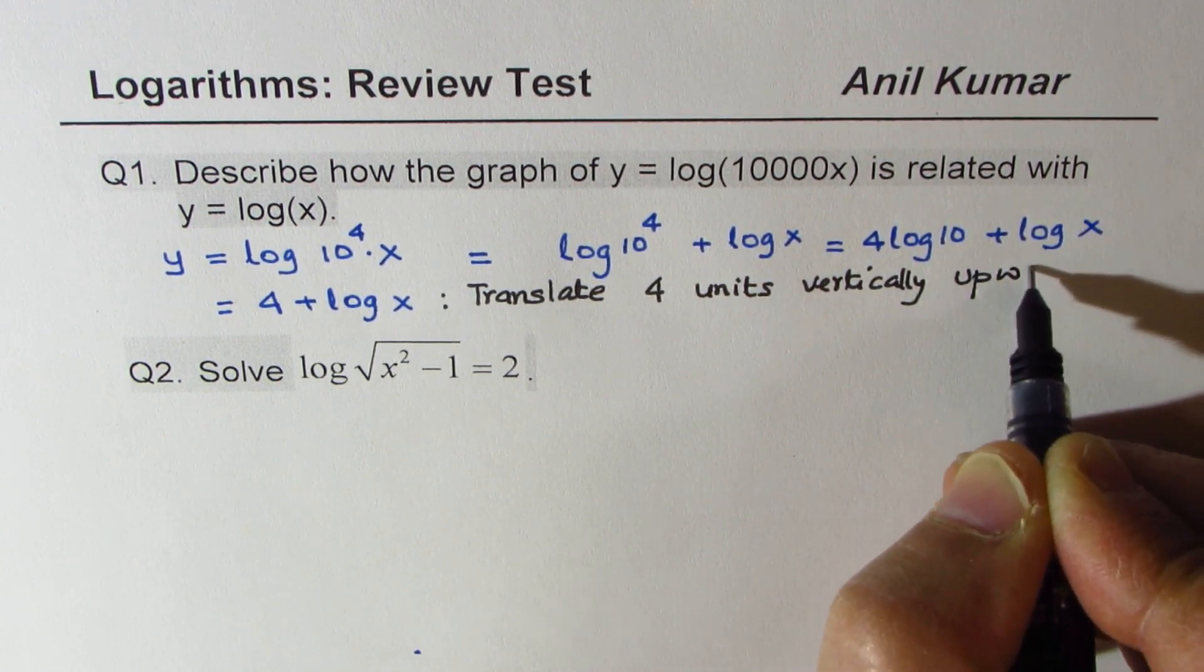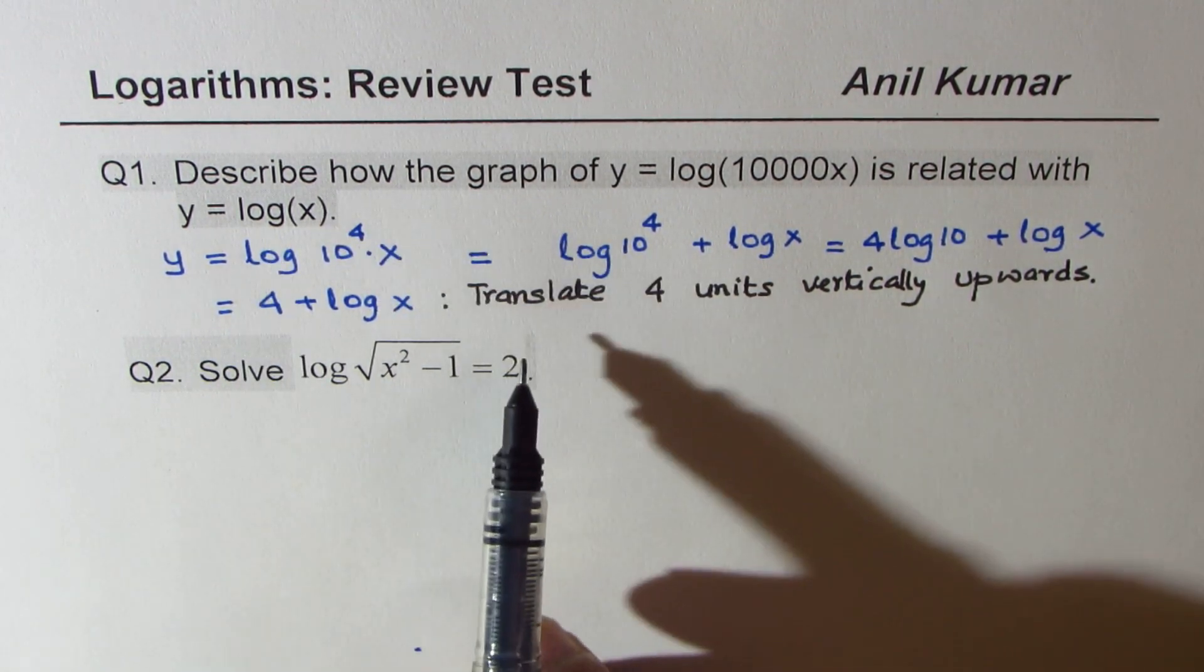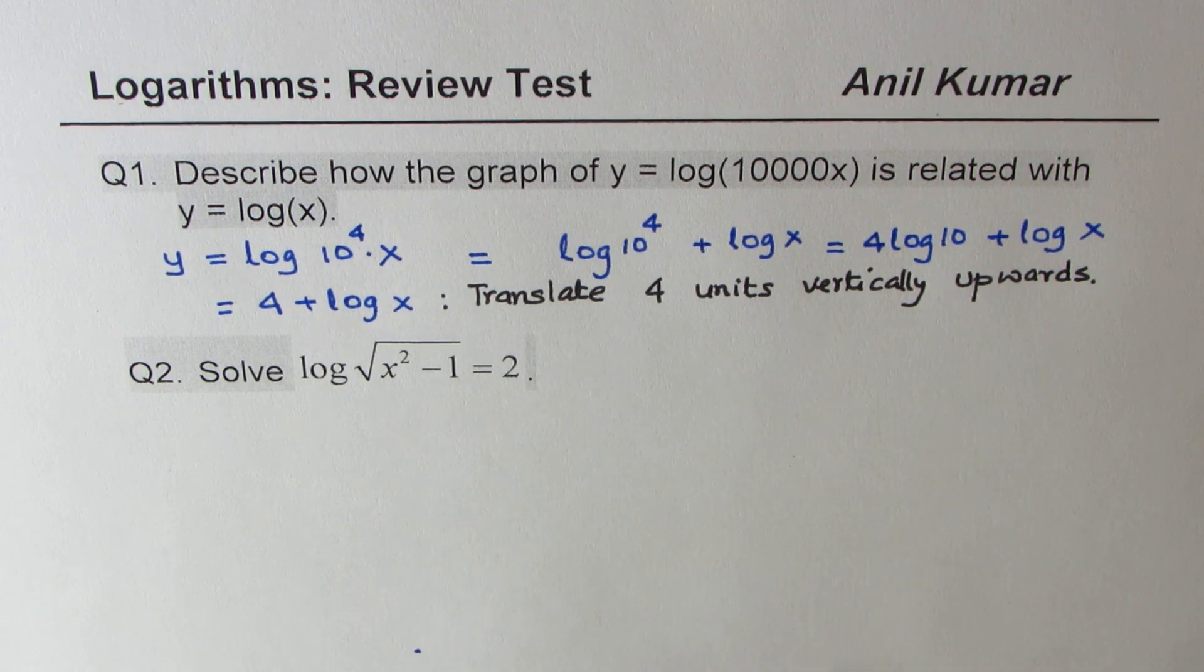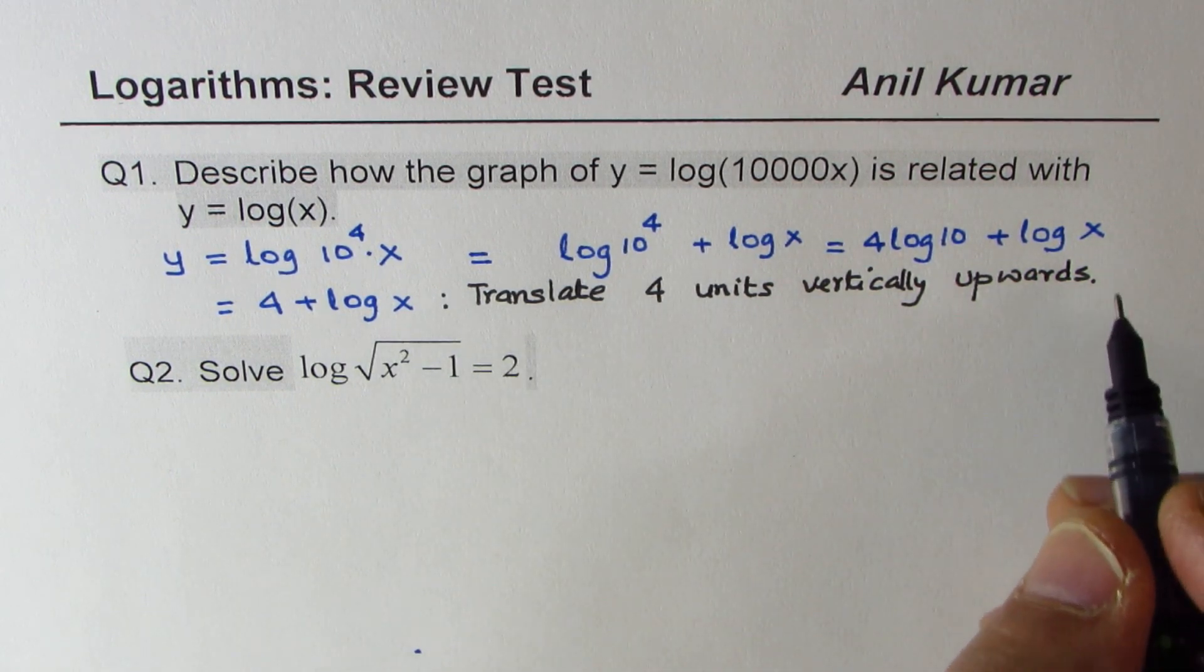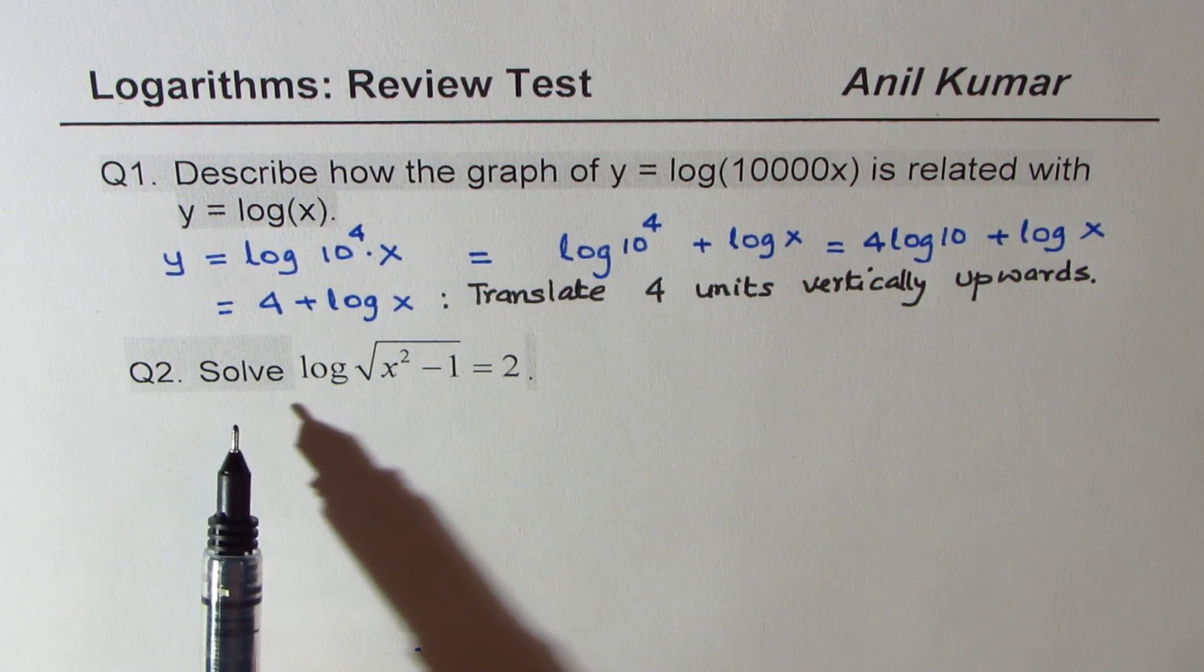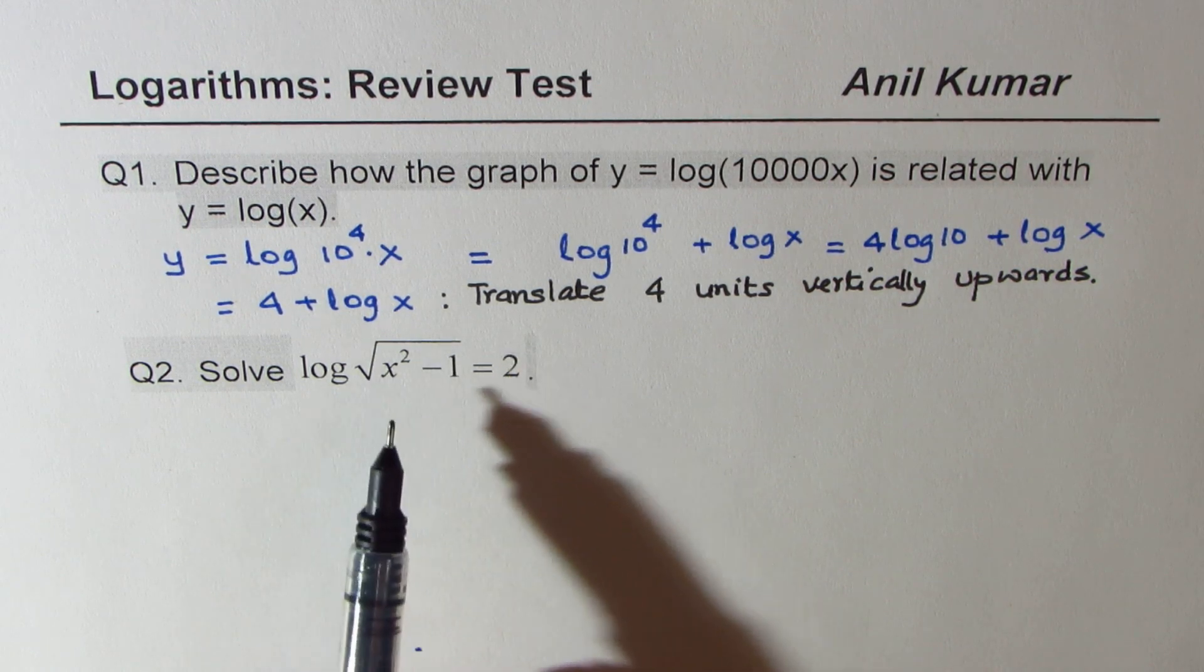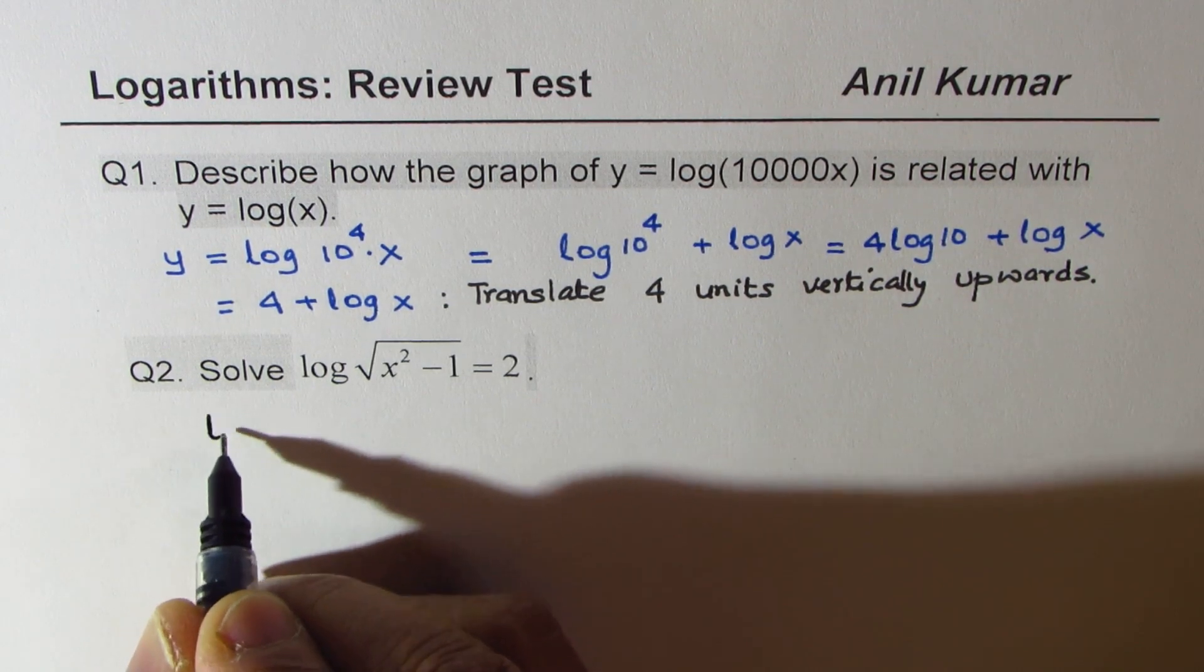vertically upwards. So the log graph will be translated 4 units vertically upwards to match with this. That's what we're trying to say. So that's kind of a shortcut answer; you could describe it as you wish.